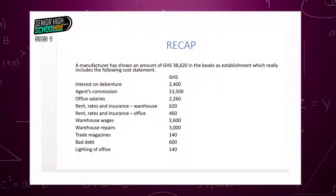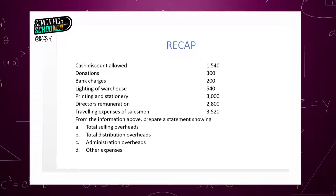We have interest on debenture. Take your pen and paper: F will be for finance or other expenses, S for selling, A for administration, and D for distribution. Per our requirements, we are supposed to look for total selling overheads, total distribution overheads, administration overheads, and other expenses. Once you've indicated where each cost element falls, let's solve it together.